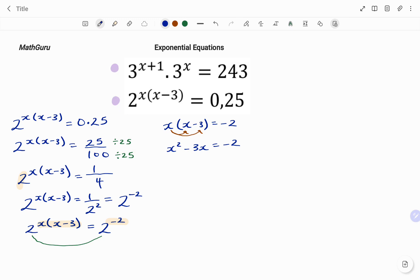This is a quadratic equation, so I'm going to move all the terms to one side. I have x squared, minus 3x. The negative 2 becomes positive 2 when I move it to the left hand side. That's equal to 0.